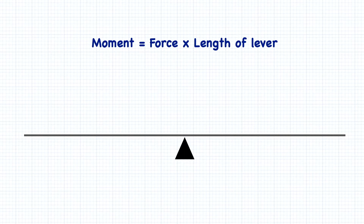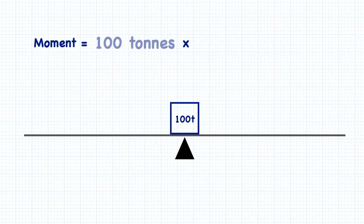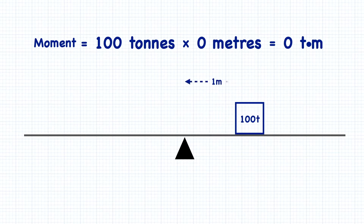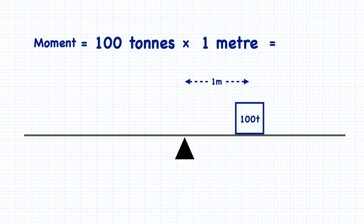If I were to take a 100-ton weight and place it directly over the fulcrum of this scale, the force applied would be 100 tons, but the length of the lever would be 0 meters. The moment, as a result, would be 0 ton-meters. But if I were to take that same 100-ton weight and move it to 1 meter away from the pivot point, the length of the lever would change to 1 meter and the resulting turning moment would be 100 ton-meters. It's the distance of the weight from the pivot point that made the difference to the turning moment.